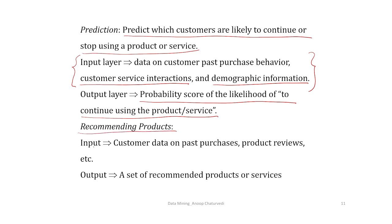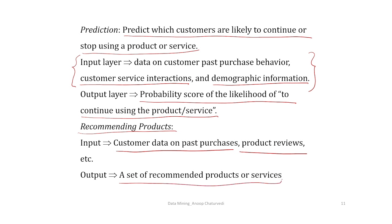For recommending products, your input layer consists of customer data on past purchases, product reviews, etc. You fit ANN on this input data and the output is a set of recommended products or services. You can then recommend those products or services to the customer — for example, recommending extended warranty for a fridge purchased one year ago.